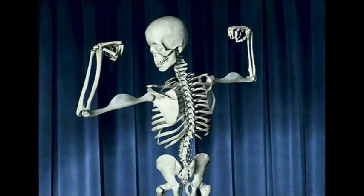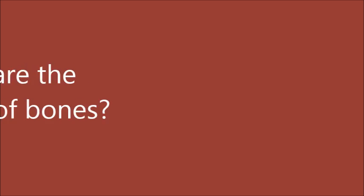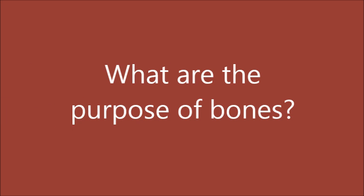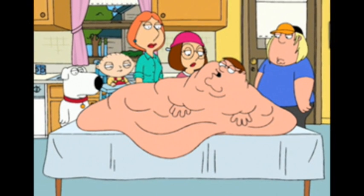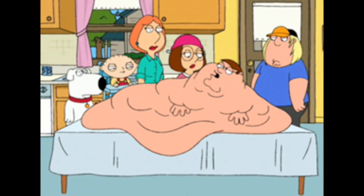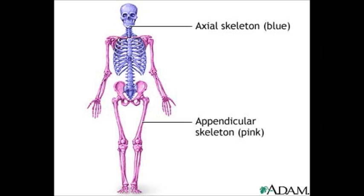Because of this, the body is a triumph of design and engineering. Bones have several different functions. The first is support — bones provide a framework that supports the body and cradles soft organs. For example, bones of the lower limb act as pillars of support for the body trunk, meaning the appendicular skeleton (shown in pink) supports the axial skeleton (shown in blue).